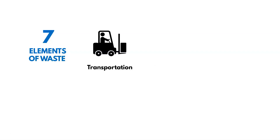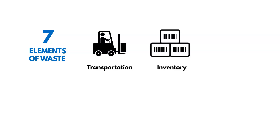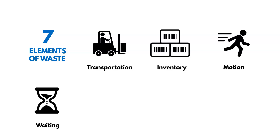The first element of waste is transportation — the unnecessary movement of materials in a process, moving those materials around more than is needed. Then there's the waste of inventory: buying more raw materials than we can immediately use, so they end up sitting around. Then there's the waste of motion — the unnecessary movement of people in the process. And there's the waste of waiting — having to wait for the next step.